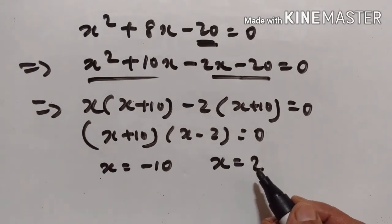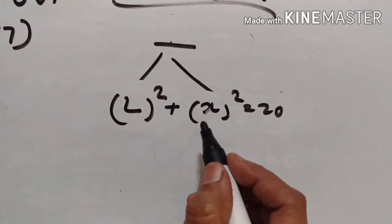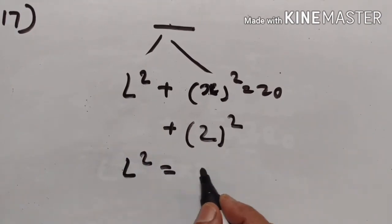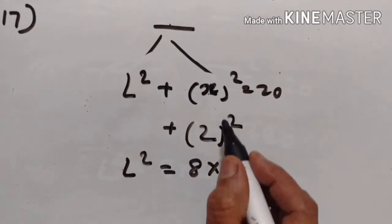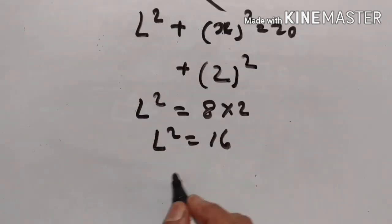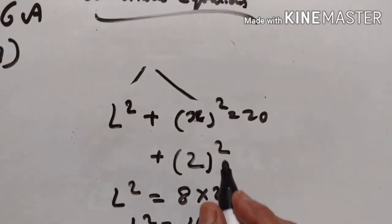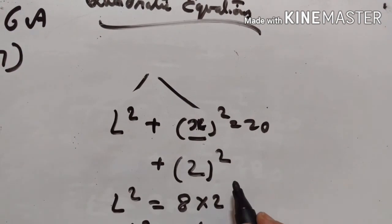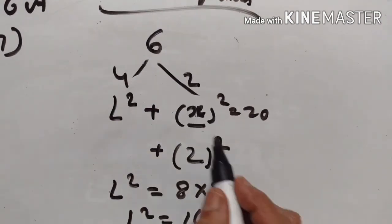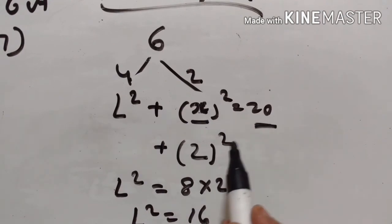Since it is a positive number divided into 2 parts, we cannot take x equals minus 10. So x equals 2. The smaller part is 2. Then L squared equals 8 times 2 equals 16, so L equals square root of 16 equals 4. The larger part is 4 and the smaller part is 2, so the number is 6. Verification: 4 squared plus 2 squared equals 16 plus 4 equals 20. Verified.